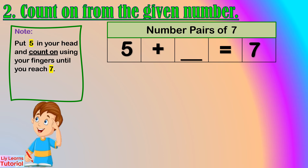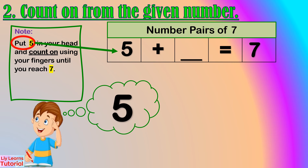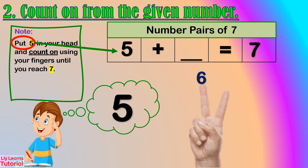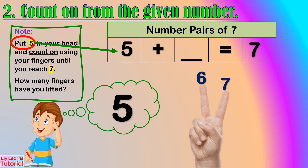Let's start from 5. Hold 5 in your head, then count up: 6, 7. How many fingers have you lifted? 1, 2 — 2 fingers. So, the number pair of 5 is 2.